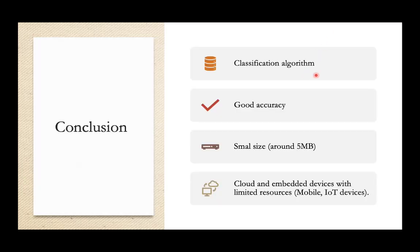In this paper, we presented a fully automated method to classify chest X-ray images, and the proposed model can detect COVID-19 with a good accuracy percentage. We strongly believe this percentage can be enhanced by training the model on larger datasets or using transfer learning to take advantage of existing pre-trained models. An additional value of this model is its smaller size — around five megabytes — which allows deployment to the cloud or embedded devices with limited resources like mobile or IoT devices. Thank you for your attention.